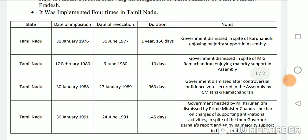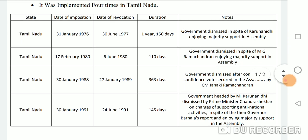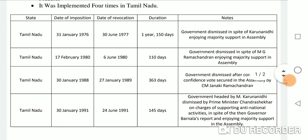Tamil Nadu: Date of imposition — 31 January 1976. Date of revocation — 30 June 1977. Duration — 1 year and 150 days. Notes: Government dismissed despite Karunanidhi holding majority support in Andhra Pradesh.